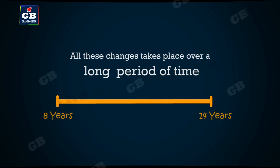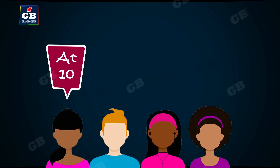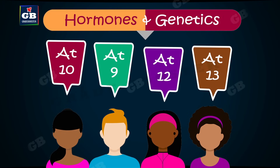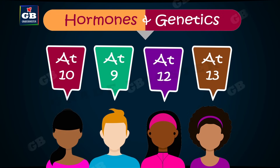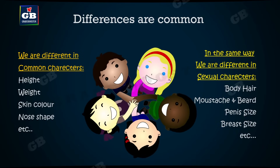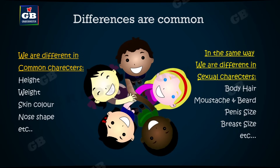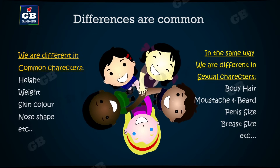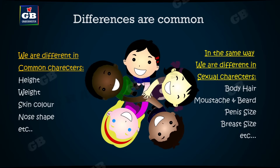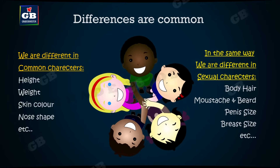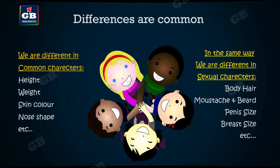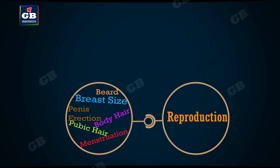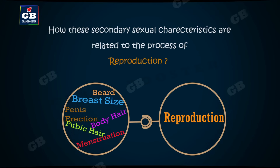All of these changes take place slowly over a long period of time and do not happen at an exact age for everyone. It depends upon hormone levels and genetics of individuals. Just as people differ in general body features like height, weight, and skin color, people also have differences in secondary sexual characteristics like body hair growth, beard and mustache growth, penis size, and breast size.